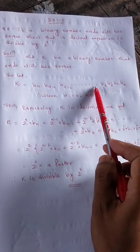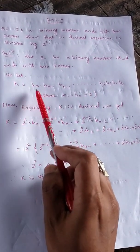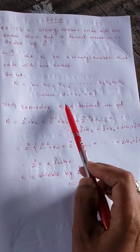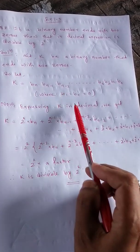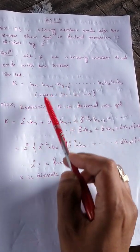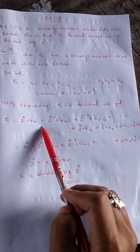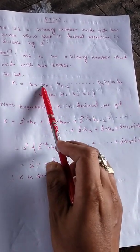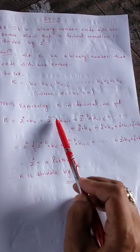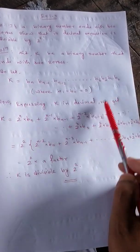Expressing k in decimal: b_n becomes 2^n times b_n, plus b_(n-1) becomes 2^(n-1) times b_(n-1), plus — and so on, adding up each positional term with the appropriate power of two.